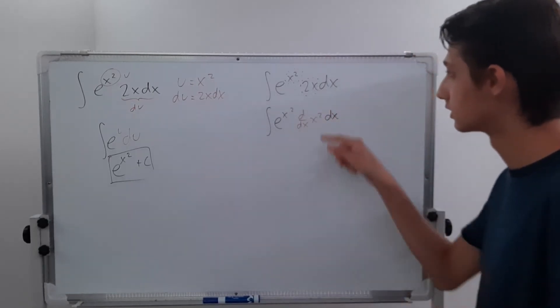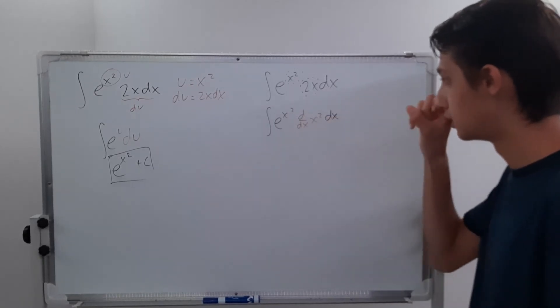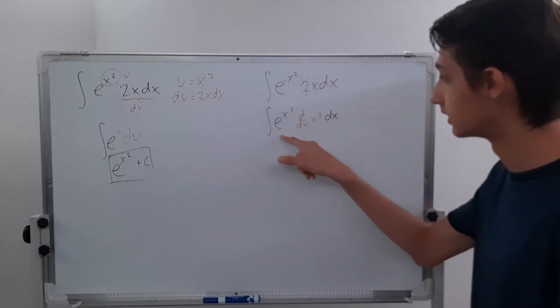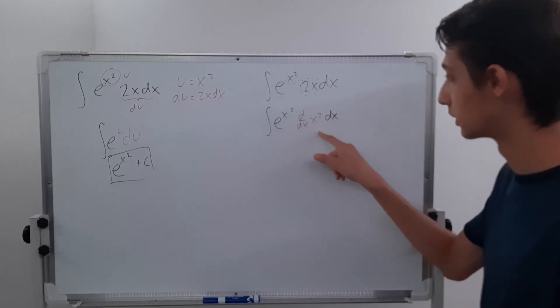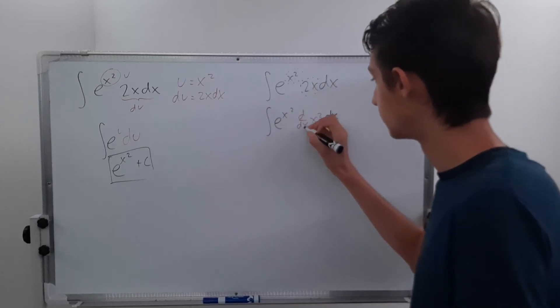So what I did here is I substituted 2x for d dx of x squared, basically saying that this is the derivative of x squared in here.